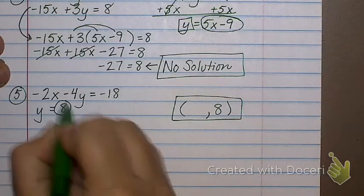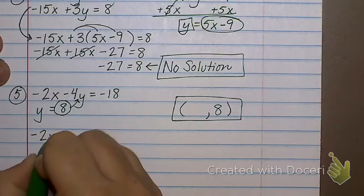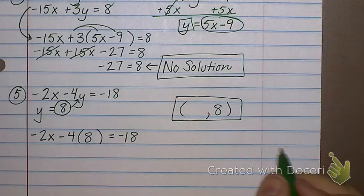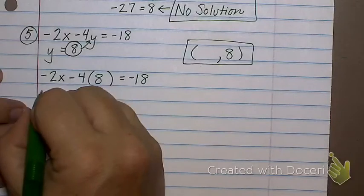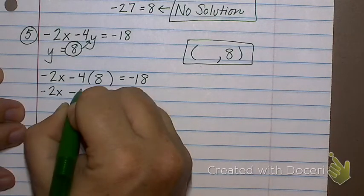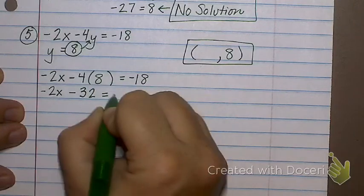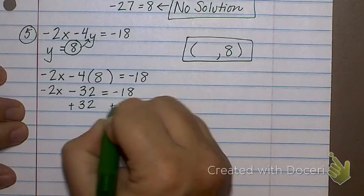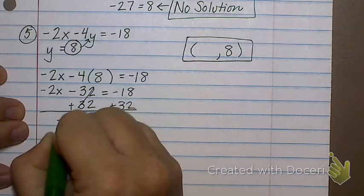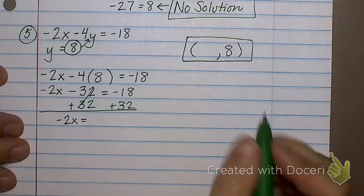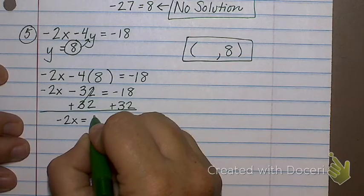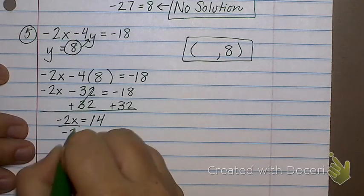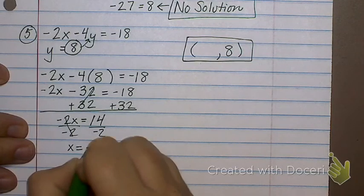Plug 8 in for y up there. So negative 2x minus 4y equals negative 18. Notice I'm always substituting in in parentheses. That's important. Helps you with your multiplication. So negative 2x minus 32 equals negative 18. What do I do now? Add 32. So negative 2x equals what? 14. Divide by negative 2, and x equals negative 7.